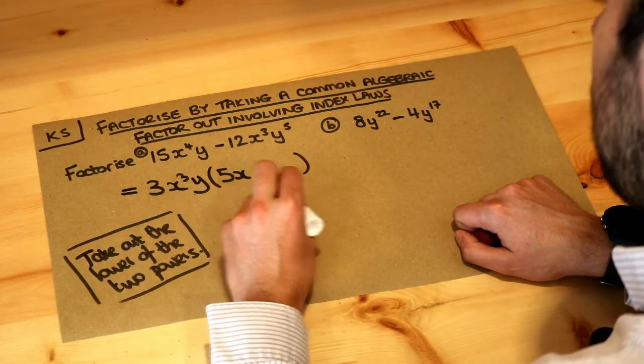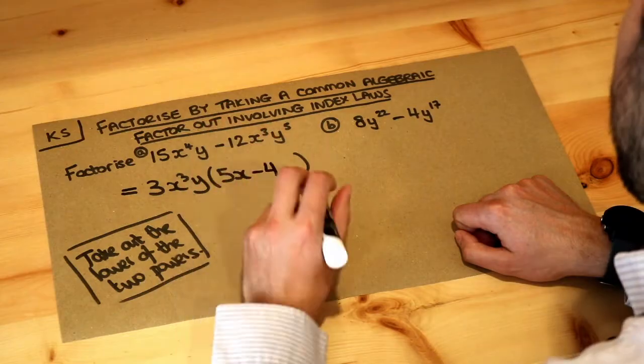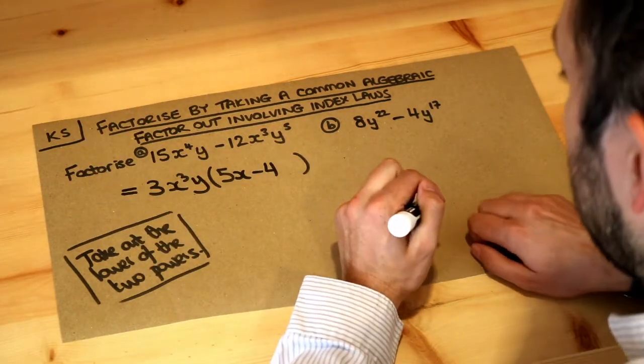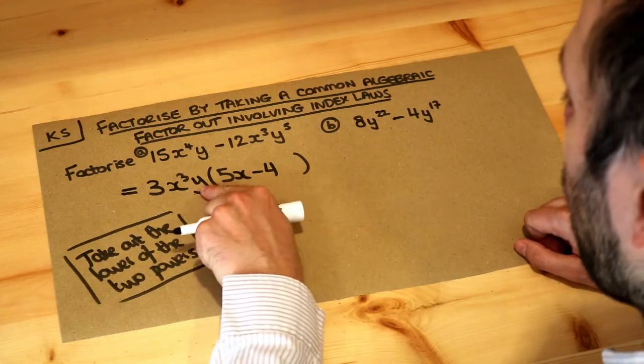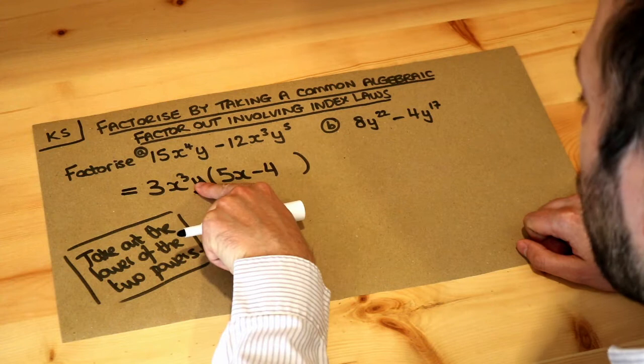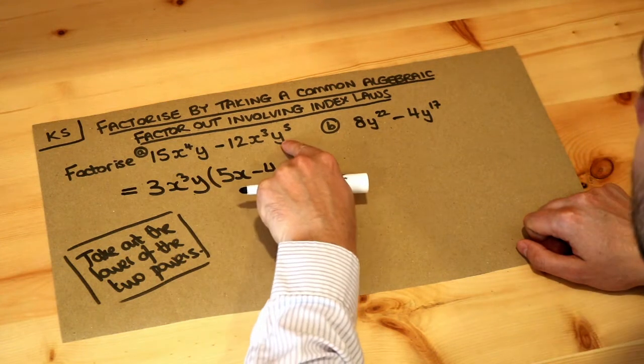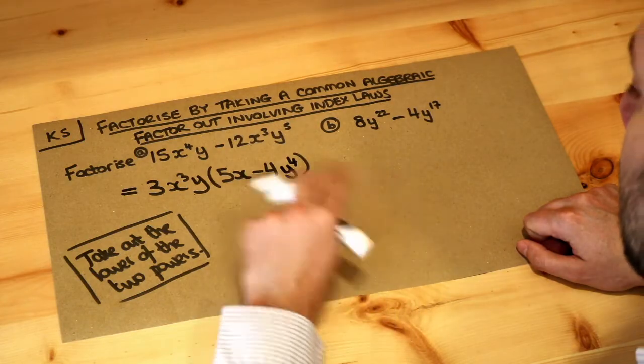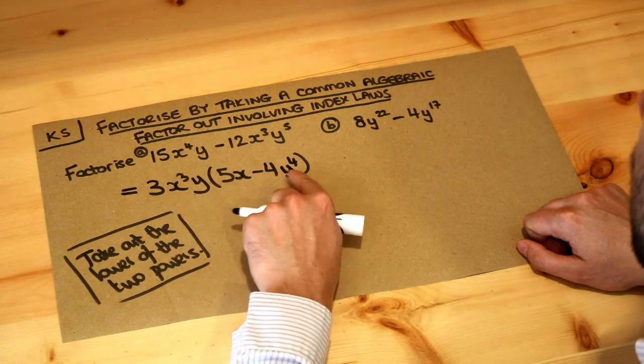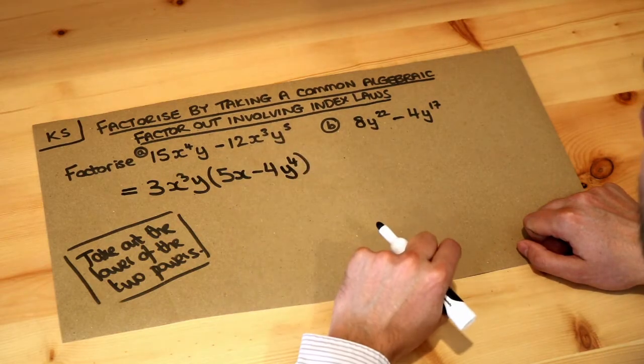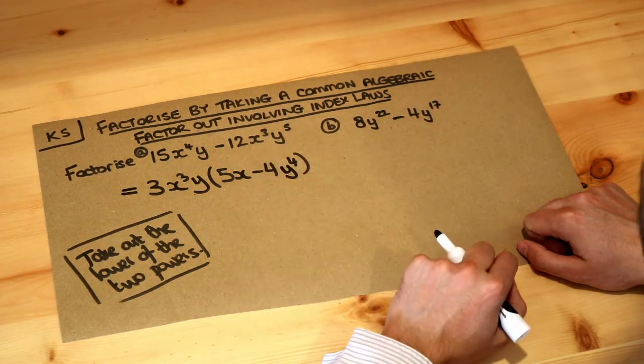And then the second term: 3 times what is minus 12? It's minus 4. x cubed times what is x cubed? Well, we don't need to times by anything else, it's already x cubed. And y times y to the what is y to the 5? Well, if it's y to the 1, what do we times it by to get to y to the 5? Would be y to the 4, because then by laws of indices, y to the 1 times by y to the 4 would be y to the 1 plus 4 - we would add those indices to get 5.